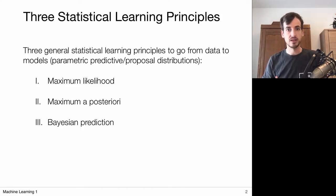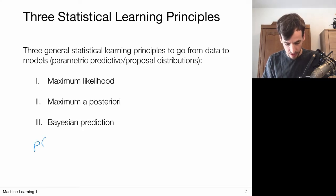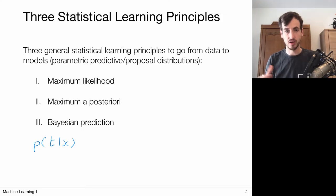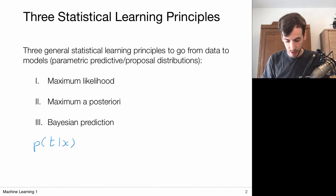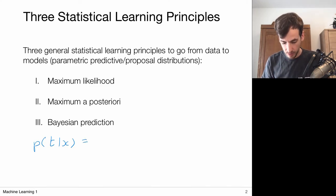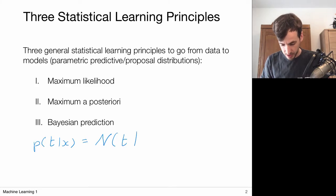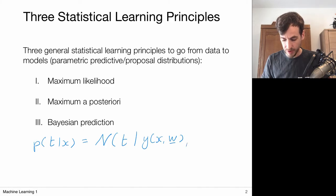Central in all cases was that we work with predictive distributions of the following form. We had some input x and we want to assign probabilities for all possible target values given this input x. We modeled this via Gaussian distributions or normal distributions, which had the following form: the normal distribution with respect to the random variable t, parameterized by some mean and some variance or inverse precision.